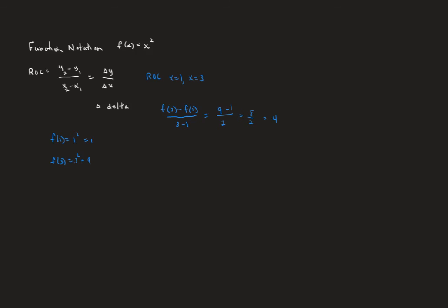Let's do one more: rate of change between x equals 3 and x equals 9. Notationally: f(9) minus f(3) over 9 minus 3. That's 9 squared minus 3 squared over 6, which is 81 minus 9 over 6. That's 72 divided by 6, which equals 12. Hopefully this clarifies what you need to do for homework number three.